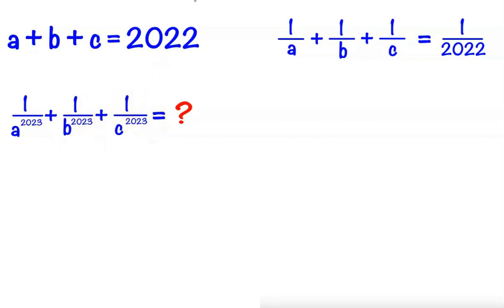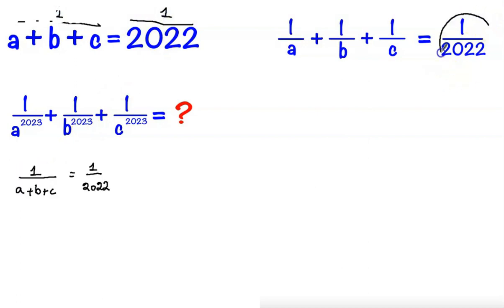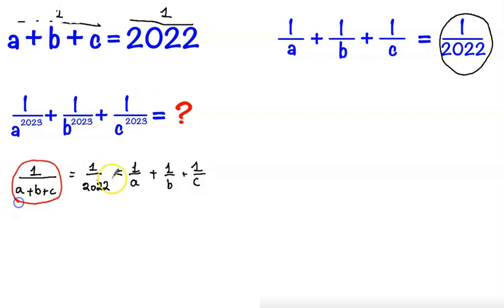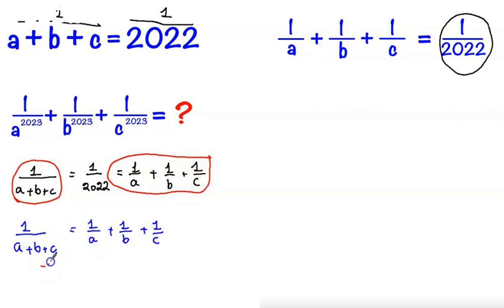Give it a try and now let's go into the solution. First, let's find the reciprocal of a + b + c, so 1/(a+b+c) = 1/2022. And 1/2022 = 1/a + 1/b + 1/c. Now let's focus on these two: 1/(a+b+c) = 1/a + 1/b + 1/c.